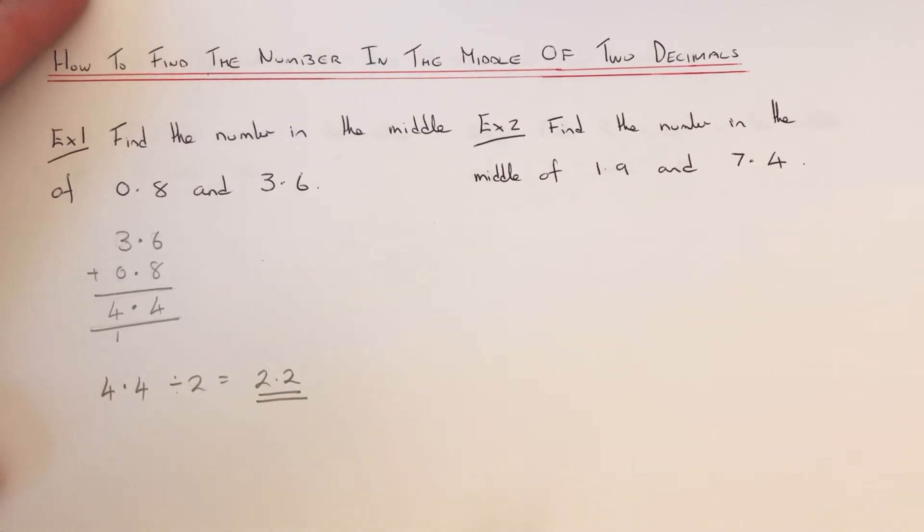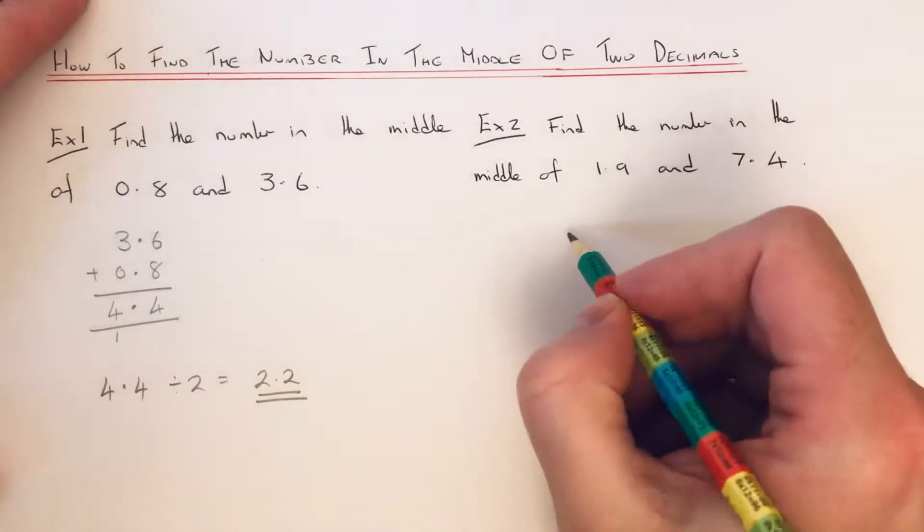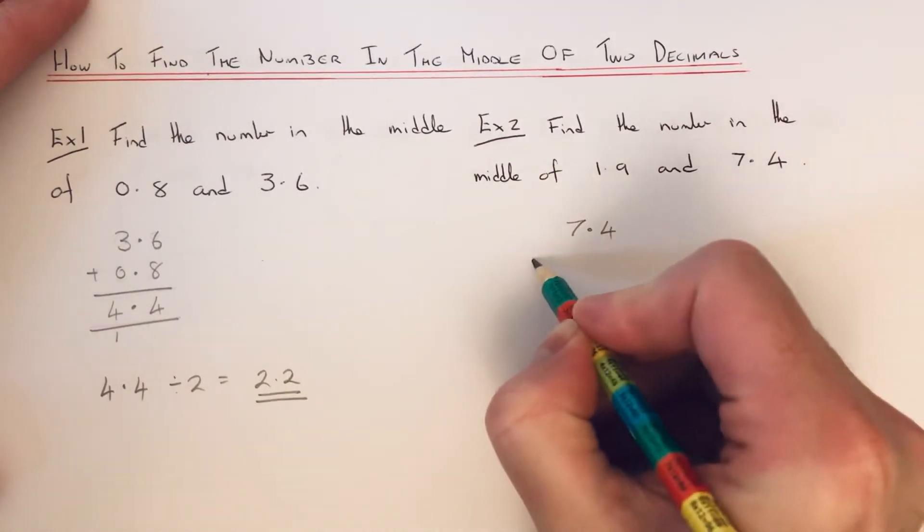Let's move on to the second example. So let's find the number in the middle of 1.9 and 7.4. So again we just add the two decimals up.